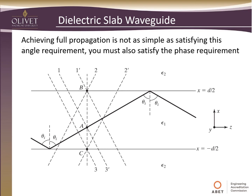You'd think you could just easily propagate down the guide, but achieving full propagation is trickier than that. If you go back and look at the math, when we hit total internal reflection, we actually cause a little bit of a phase shift. If we don't have the right phase shift, the wave comes in at one angle, and once it hits that phase shift it looks like the wave has shifted — it's actually coming in at a different angle. If you keep doing that over and over, the phase shifts could be erratic and cause additive or subtractive superposition on each other.